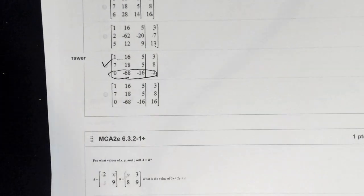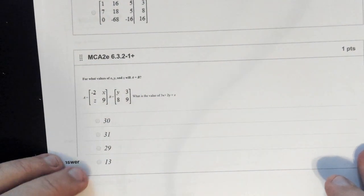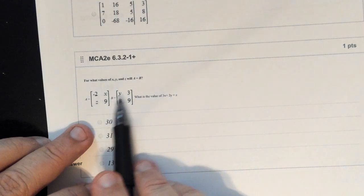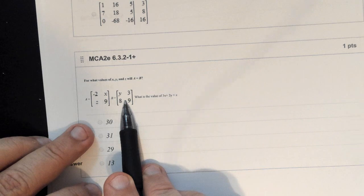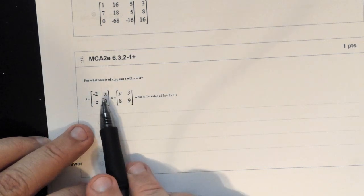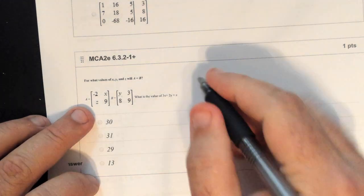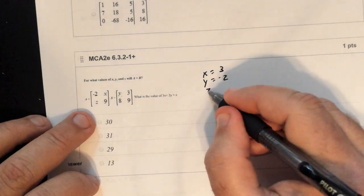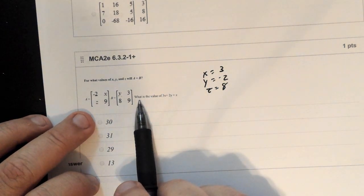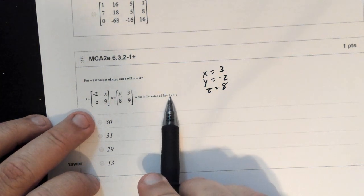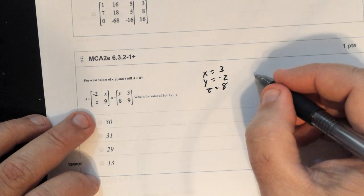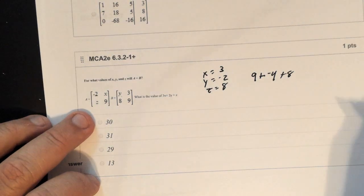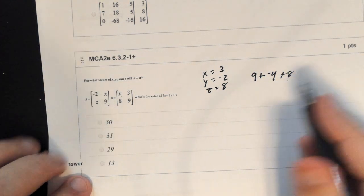Here you have two equal matrices. For them to be equal, they have to be the same size and their corresponding elements must be equal. So y equals negative 2, x equals 3, and z equals 8. Then we find 3 times x plus 2 times y plus z: that's 9 plus negative 4 plus 8, which equals 13.